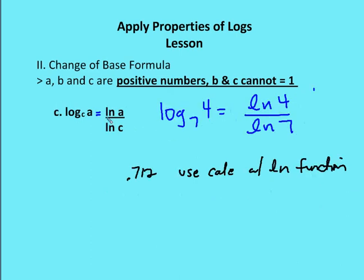And then finally, log base c of a is natural log of a over the natural log of c. So same example, log base 7 of 4 is the same as natural log of 4 over the natural log of 7, and you get the same value 0.712 as a result.